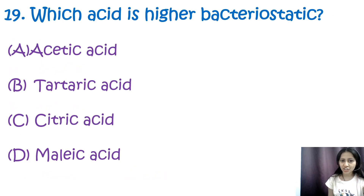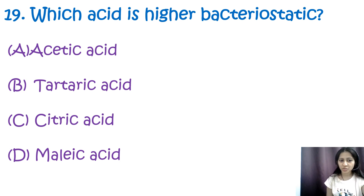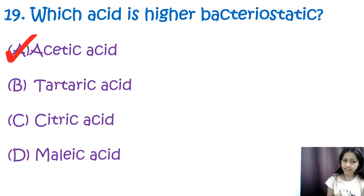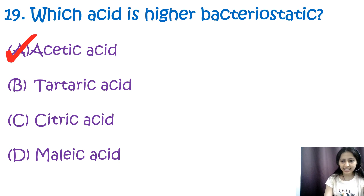Question 19: Which acid will have a higher bacteriostatic effect? Options are acetic acid, tartaric acid, citric acid, and malic acid. The correct answer is A, acetic acid. At a given pH, acetic acid has a higher bacteriostatic effect because under comparable conditions it is considered less dissociated than citric acid, tartaric acid, and malic acid, which is why acetic acid shows a higher bacteriostatic effect.